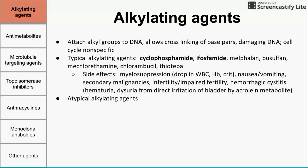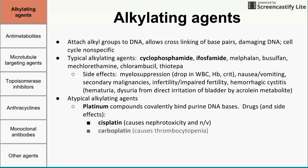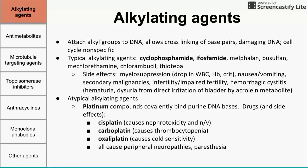We have atypical alkylating agents as well, starting with the platinum compounds. These work by covalently binding purine DNA bases. Three to know: cisplatin, which has side effects of nephrotoxicity and nausea and vomiting — it's the strongest inducer of nausea and vomiting we'll discuss today, and almost certainly causes vomiting if no antiemetic is given. Carboplatin causes platelet problems, and oxaliplatin causes cold sensitivity. It's worth mentioning that all platinum compounds also cause peripheral neuropathies — pins and needles tingling in your fingers and toes.